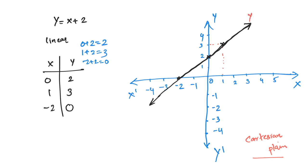This is y equal to x plus 2 — a straight line. This is the graph.